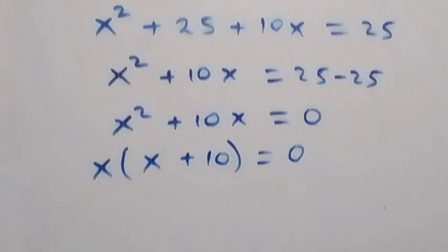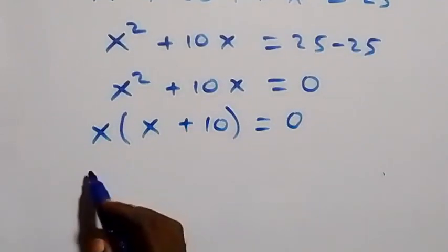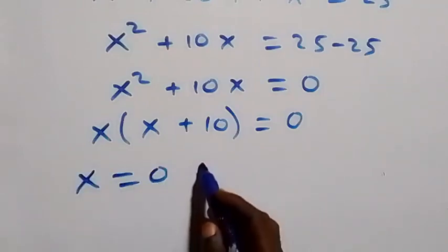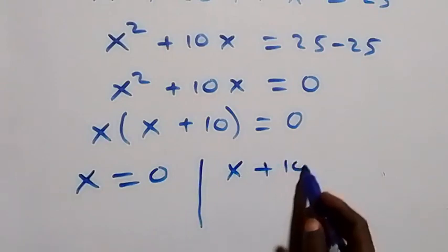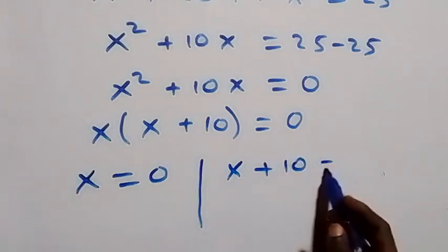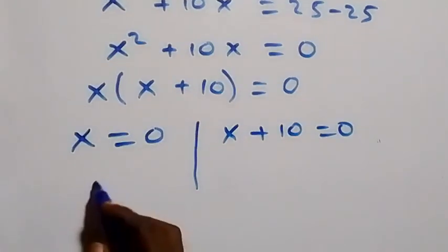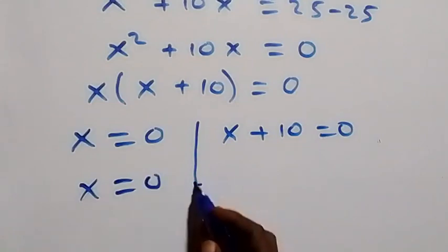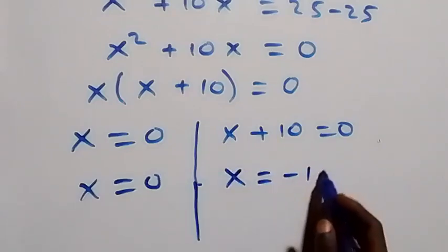From here, either x equals zero, or x plus 10 equals zero. When we take 10 to the other side, we have x equals minus 10. So we have these two values of x.